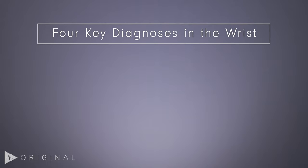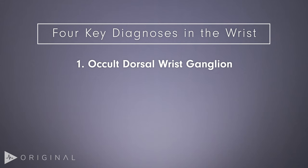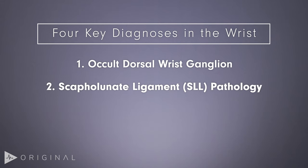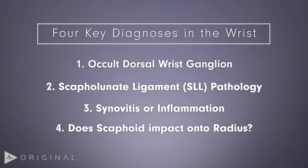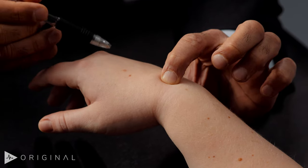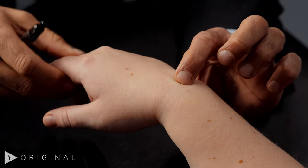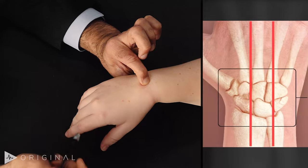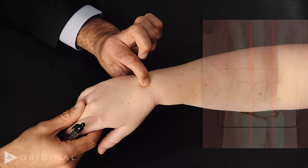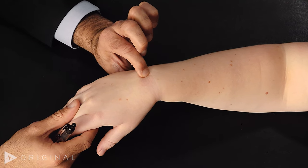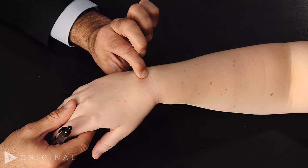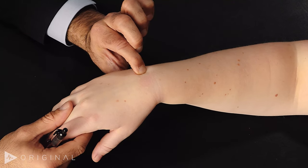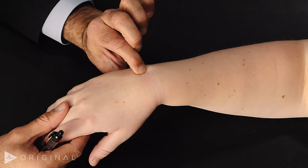There are four key diagnoses in the scapholunate region: an occult dorsal wrist ganglion, scapholunate ligament pathology, synovitis (for example in gymnasts), and dorsal scaphoid impaction on the radius in maximal extension. Moving ulnar to the Lister's tubercle line lies the lunate — the keystone of the wrist. Between the two reference lines is the lunotriquetral ligament. Further ulnar, the most dorsal-ulnar structure on the wrist is the triquetrum — an important landmark because if you can find this bone, you can feel your way around the entire wrist.